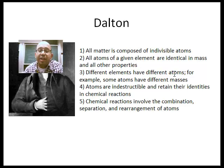Different elements have different atoms. For example, some atoms have different masses. So sulfur atoms are different than hydrogen atoms, which are different than oxygen atoms. Atoms are indestructible. They retain their identities in chemical reactions. Now this is actually not true anymore, because you can break apart atoms into their parts: protons, neutrons, electrons, and they don't keep their same identities when they're in chemical reactions. They don't have the same chemical and physical properties.